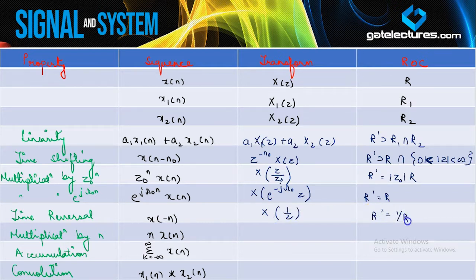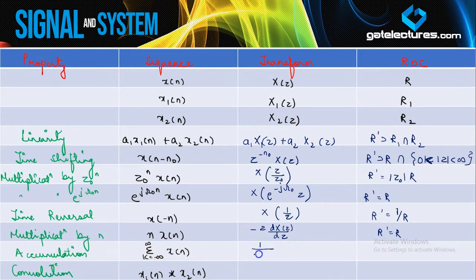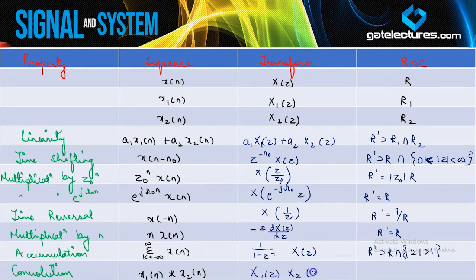For time reversal, the ROC is going to reverse or invert, because this converts a left-sided signal to a right-sided signal. If you are multiplying by n in the time domain, this results in differentiation in the z-domain with ROC being the same. Accumulation or summation in the time domain is multiplication by 1/(1−z^{−1}) in the z-domain, with ROC being R∩{|z|>1}. Convolution in the time domain is multiplication in the z-domain, with ROC being the intersection of the two ROCs.